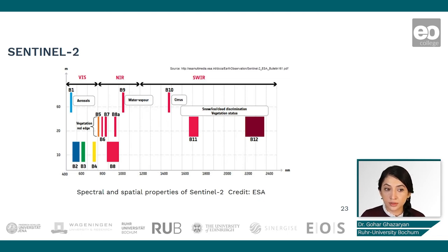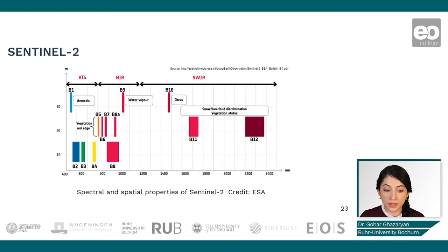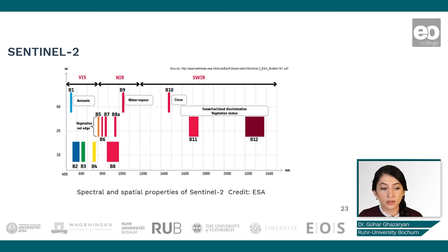As a reminder, the Sentinel-2 dataset provides multispectral data in the visible, near-infrared, and shortwave infrared spectrum. It's important to remember the different bands available and their resolution. This is a multi-resolution dataset — some bands are available at 10, 20, or 60 meter resolution, which will affect the selection of input bands in our classification.